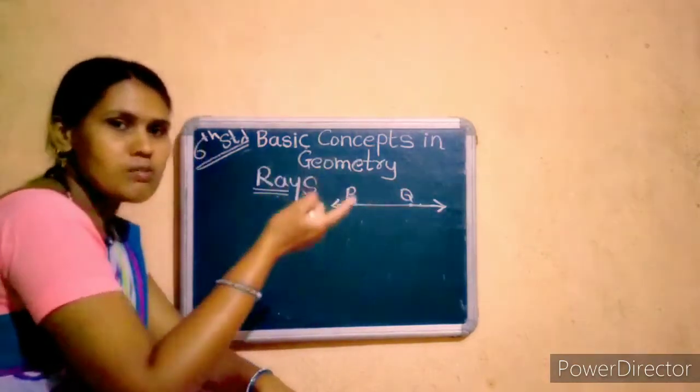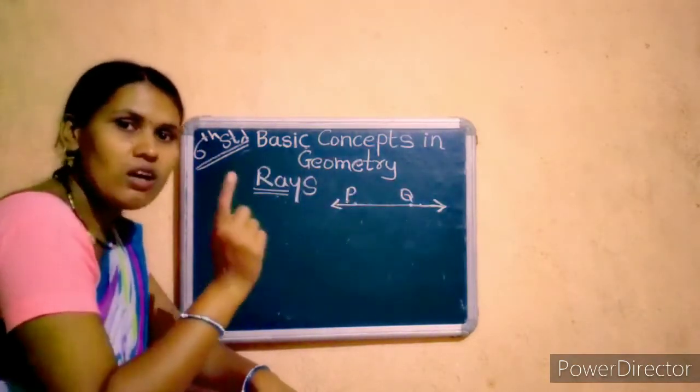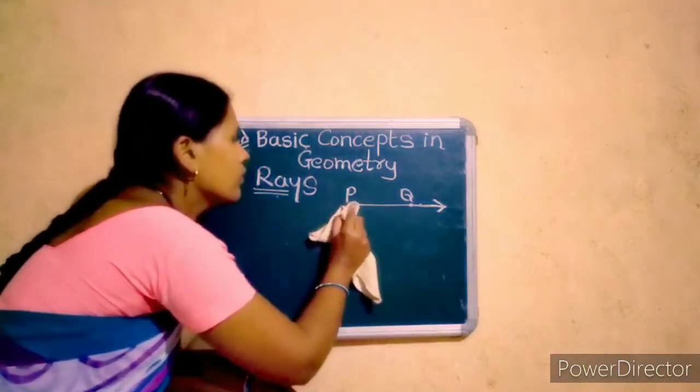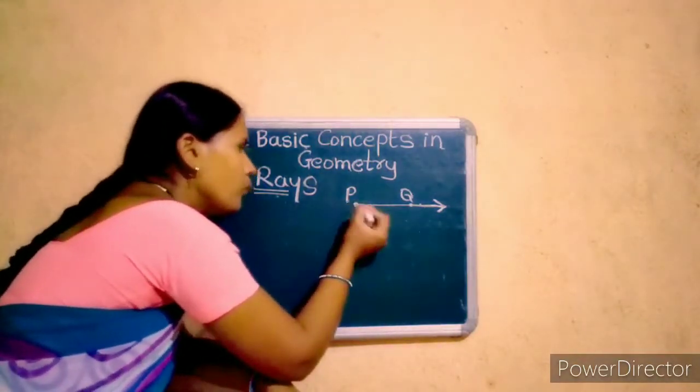And if the arrow is on one side only, that's called ray. That's called ray PQ.